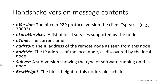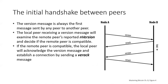The version message includes information like the version, local services, the time, the IP address of the remote node, the IP address of the local node, the type of software running on this node, and the block height of this node's blockchain. The version message is always the first message sent by any peer to another peer. The local peer receiving a version message will examine the remote peer's reported version and decide if the remote peer is compatible. If compatible, the local peer will acknowledge the version message and establish a connection by sending an acknowledgement message.